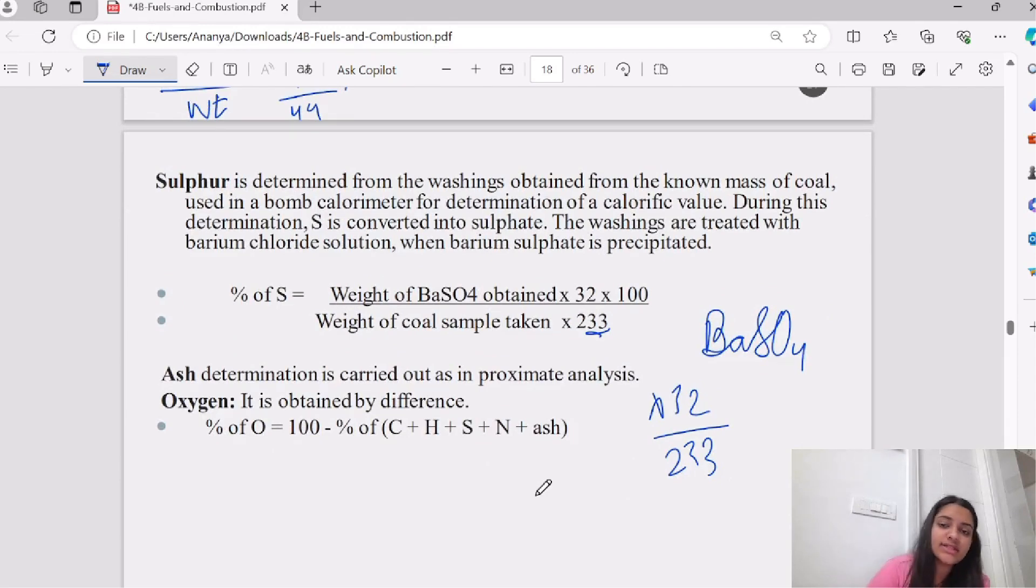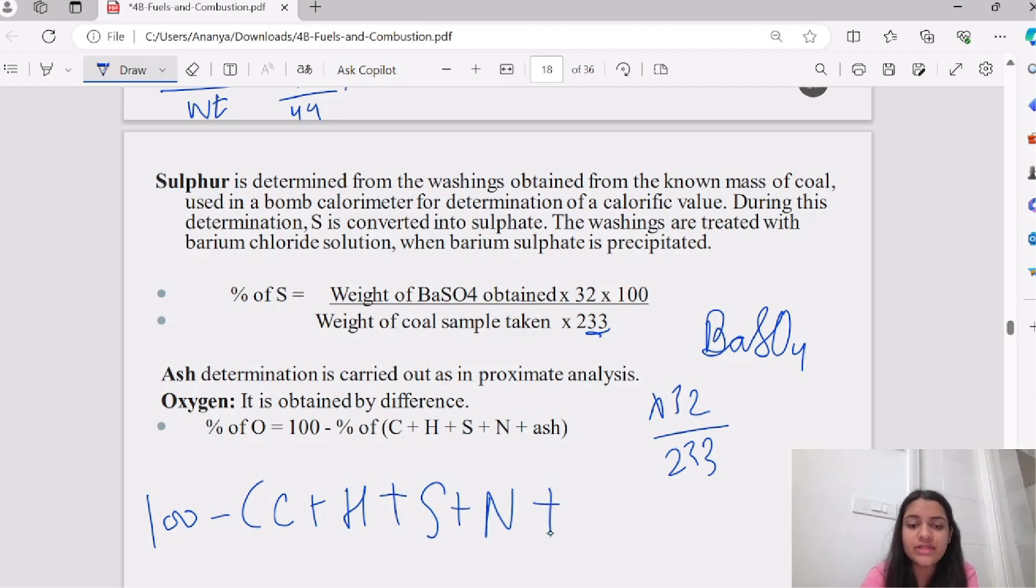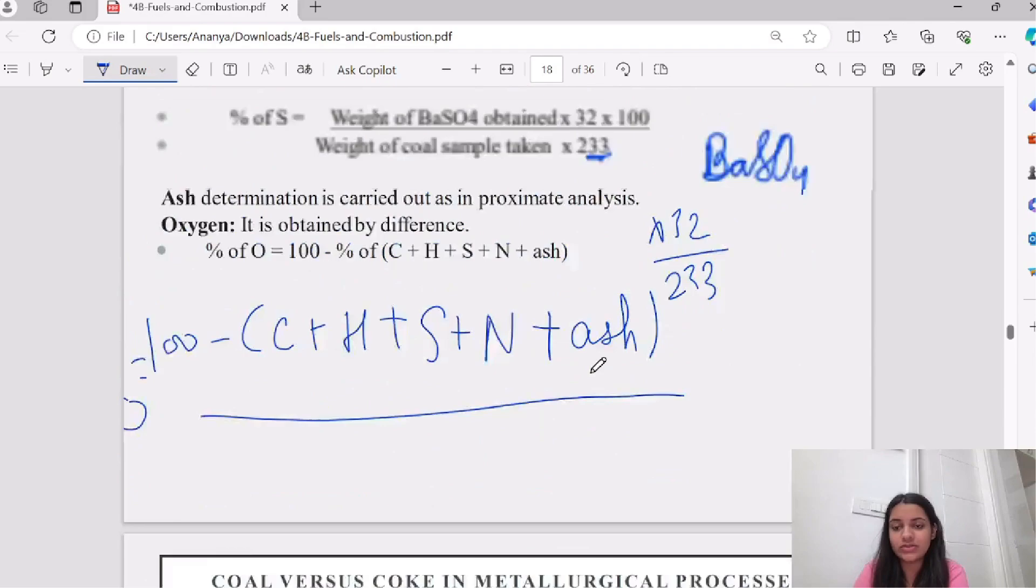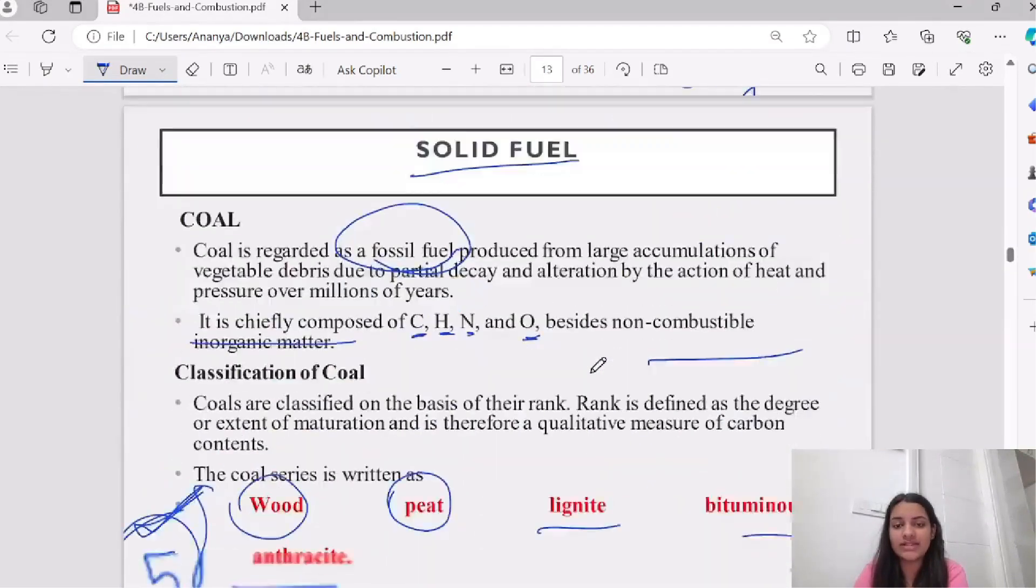What is oxygen? Oxygen is calculated as 100 minus carbon, hydrogen, nitrogen, sulfur, and ash. The percentage of oxygen will come from 100. This was your ultimate analysis. We have studied proximate analysis and ultimate analysis.